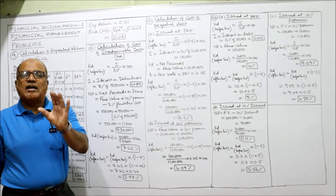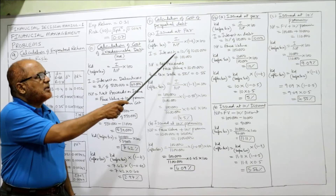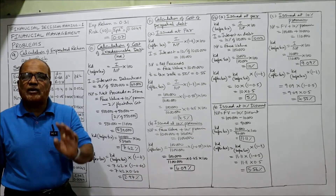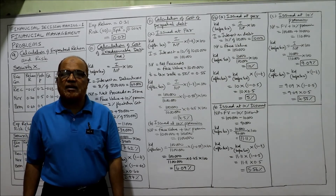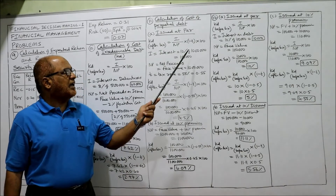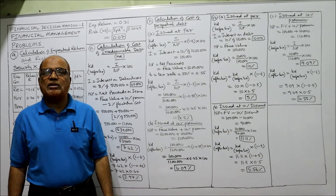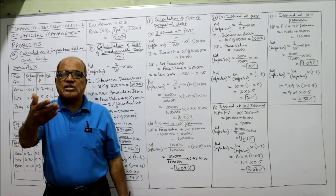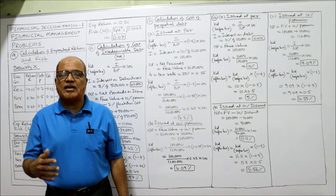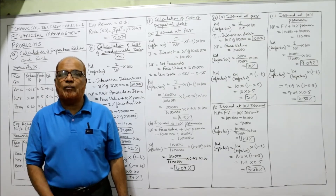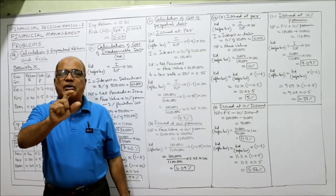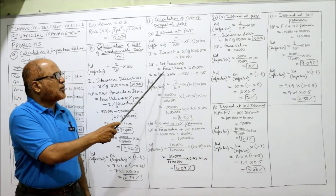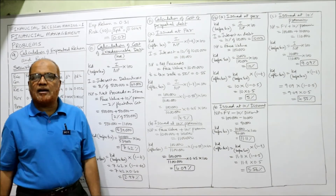Case A — issued at par. Interest is always calculated on face value: 10% of ₹10 lakh = ₹1 lakh. So I = ₹1 lakh. Net proceeds: since the debt is issued at par (face value), with no premium, no discount, and no flotation cost, net proceeds = face value = ₹10 lakh.